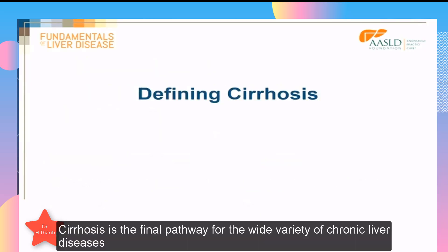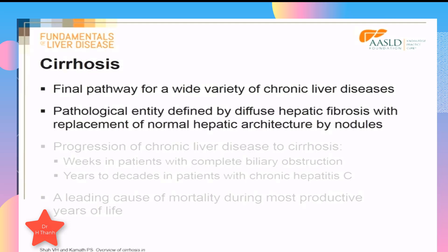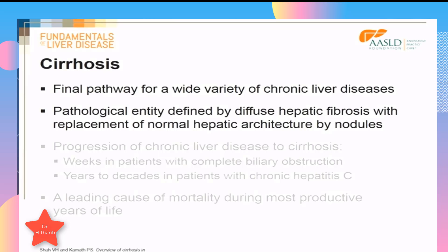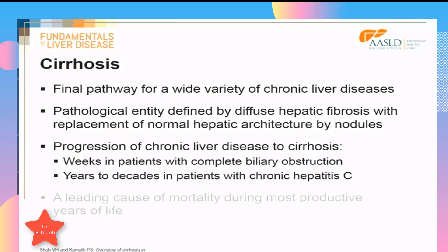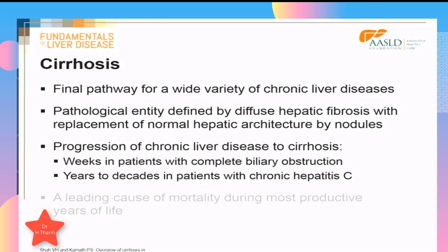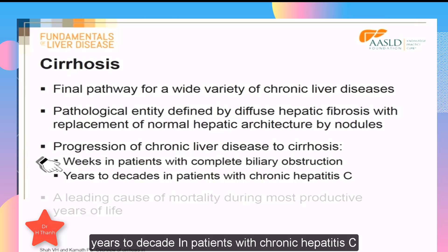Cirrhosis is the final pathway for a wide variety of chronic liver diseases. It is a pathological entity defined by diffuse hepatic fibrosis, with replacement of the normal hepatic architecture by nodules. Progression of chronic liver disease to cirrhosis is quite variable, from weeks in patients with complete biliary obstruction to years to decades in patients with chronic hepatitis C.